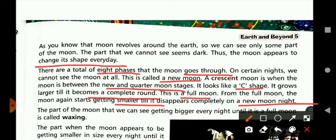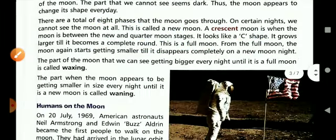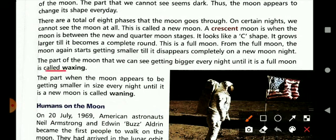The part of the moon that we can see getting bigger every night until it is full moon is called waxing. The part when the moon appears to be getting smaller in size every night until it is a new moon is called waning.